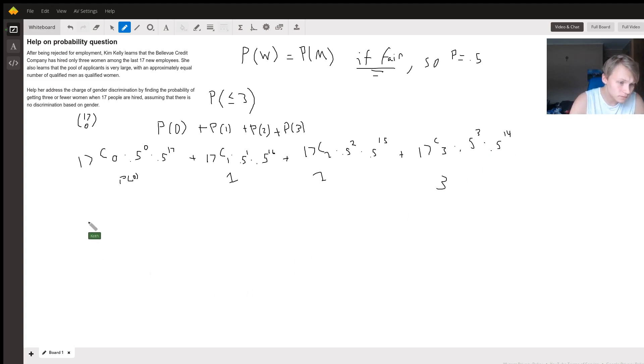What we can actually do here is simplify this down to 17 choose 0 plus 17 choose 1 plus 17 choose 2 plus 17 choose 3, all times 0.5 to the 17. You can see that all of these equal 0.5 to the 17. Because this is just a bunch of numbers that sum to 834, times 0.5 to the 17 is going to equal 0.0064.